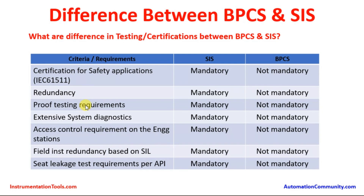Proof testing requirements: for the safety instrumented system, proof testing is mandatory as per IEC standards. For BPCS, it is not mandatory — it is optional. When a particular loop in the BPCS control requires testing, time limits may not be as strict as SIS. Extensive system diagnostics: SIS controllers have more robust intelligence and undergo more rigorous diagnostics running inside the processor, input/output modules, and communication modules. For BPCS, extensive diagnostics are not mandatory, and even though many systems have diagnostic facilities, they are not as extensive as SIS.